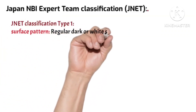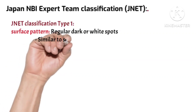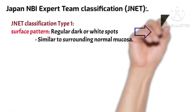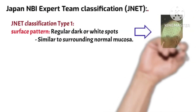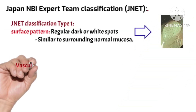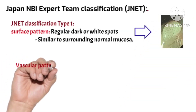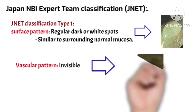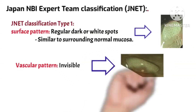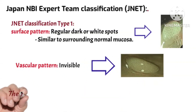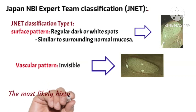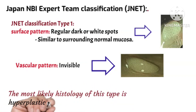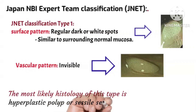JNET Type 1 shows regular dark spots and white spots in its surface pattern, similar to the surrounding normal mucosa, and its vascular pattern is invisible. The most likely histology of this type is hyperplastic polyp or sessile serrated polyp.